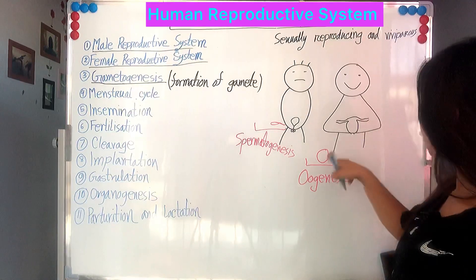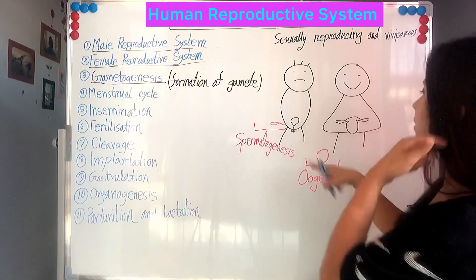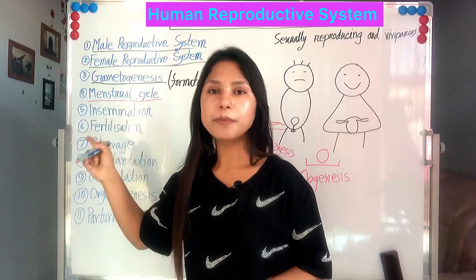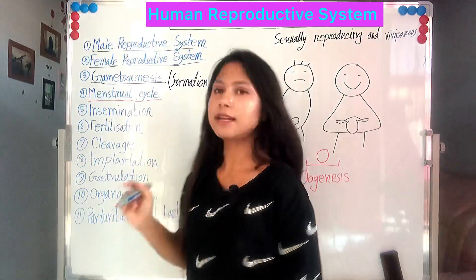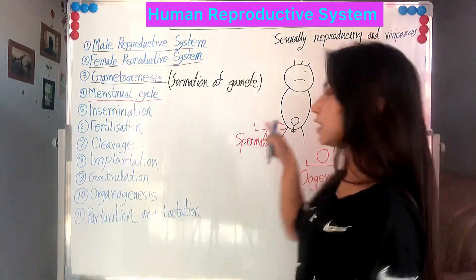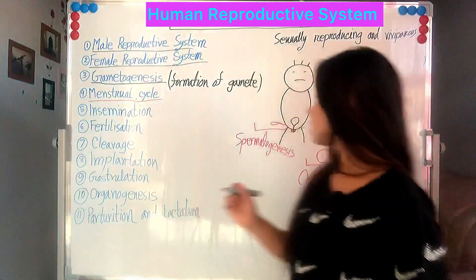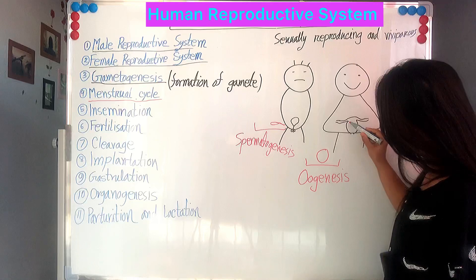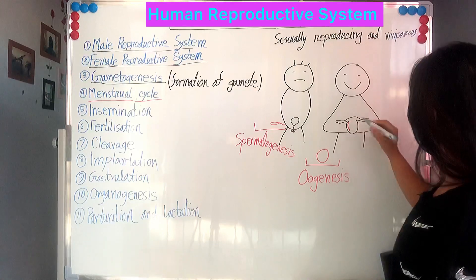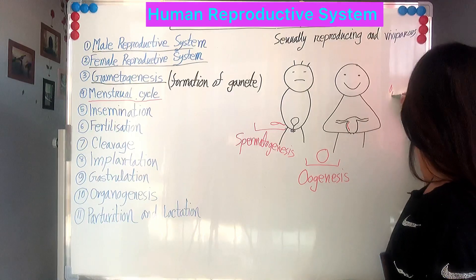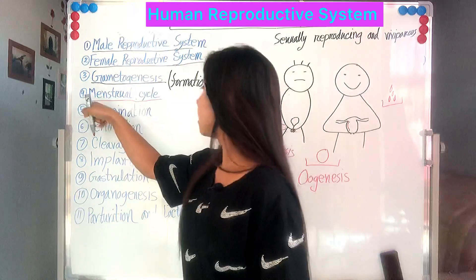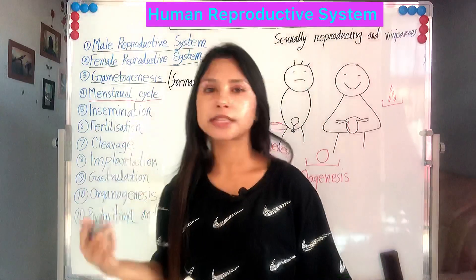Then we will learn one more term that only happens in females — the menstrual cycle. If fertilization does not occur and the ovum does not meet with sperm, then the ovum dies. When the ovum dies, the innermost uterine wall breaks down and comes out as blood. This cycle is called the menstrual cycle because it happens every month.